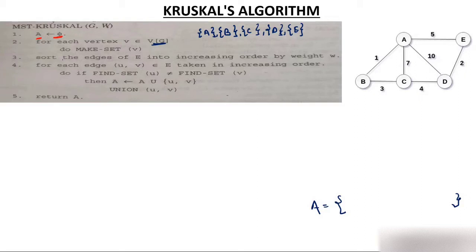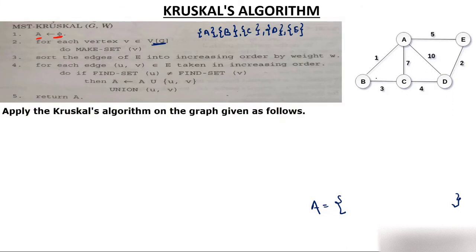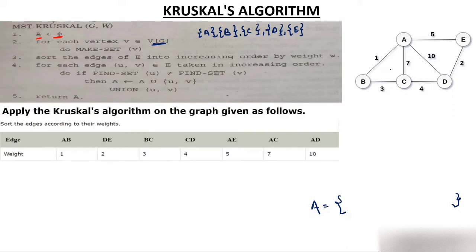The third step says: sort the edges E into increasing order by weight. From the given graph, you sort the edges. So I have sorted the edges of this particular graph according to their weight. AB is the minimum weight edge — AB is 1. And AD is at the highest weight, so AD is at the last position.